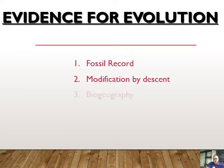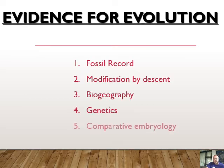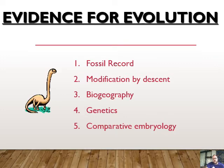The evidence for evolution: we're going to look at the fossil record, modification by descent, genetics, and comparative embryology. In this lesson I'm only going to go up to the fossil record, and then we'll do modification by descent, biogeography, and genetics embryology in the next lesson. So these are going to be quite compact. This is a pretty picture of a dinosaur, just so you know where we are going.